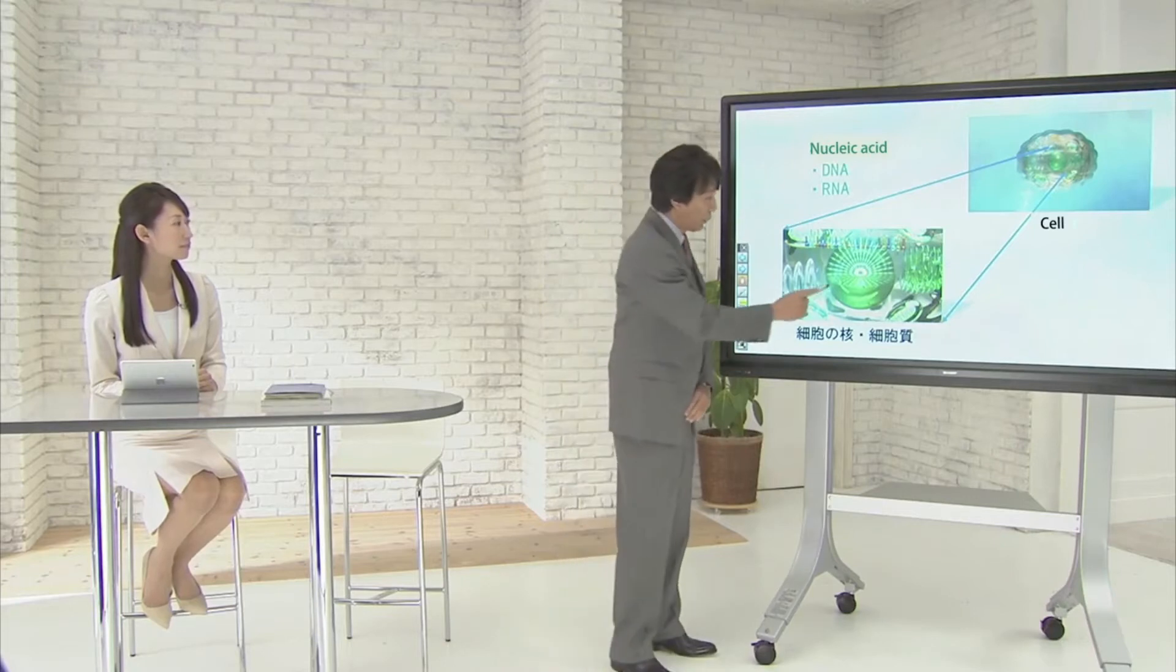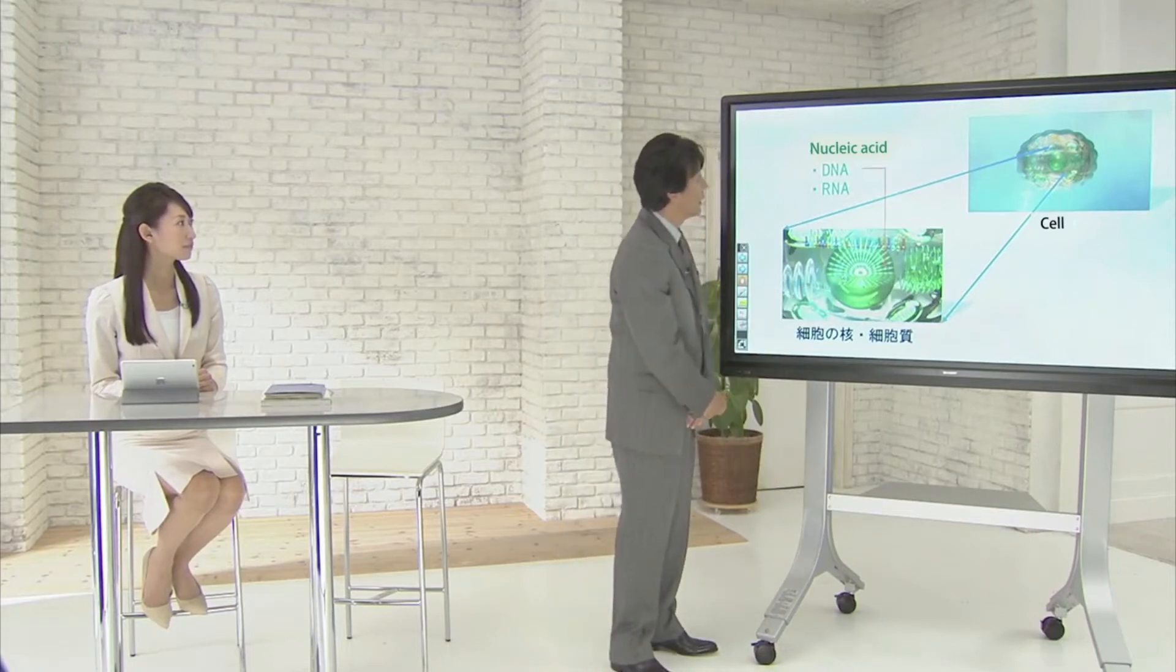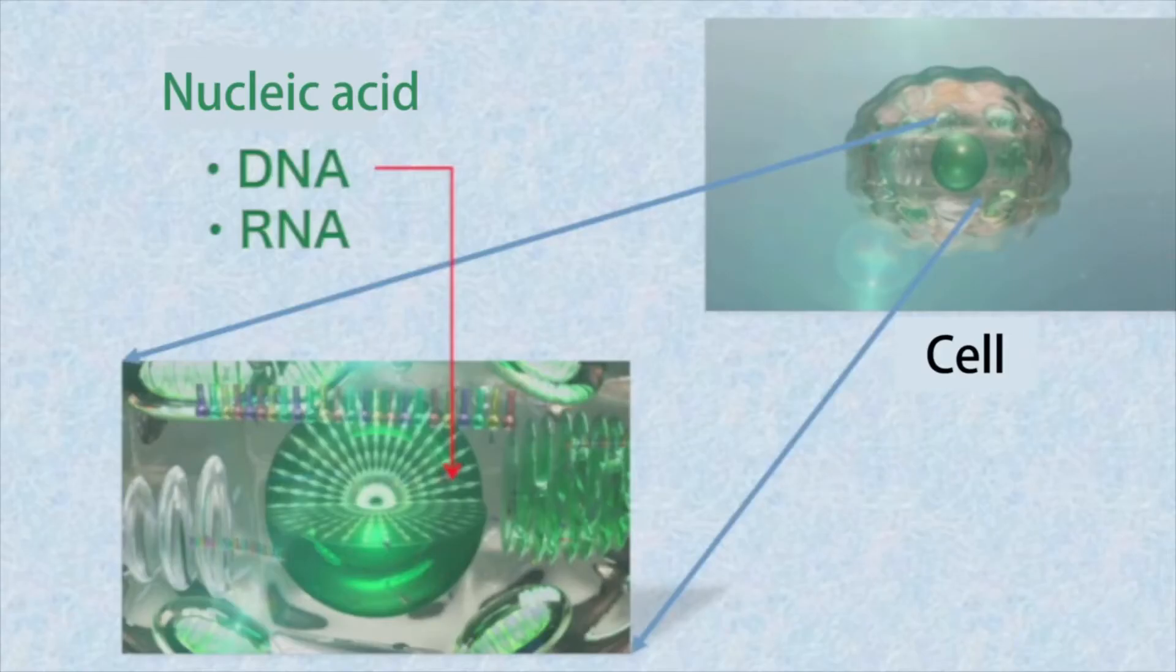Nucleic acid refers to DNA, which exists in the nucleus of a cell, and RNA, which exists both in the nucleus and the cytoplasm of a cell. These two types of nucleic acid are considered to be the fundamental building blocks of life.